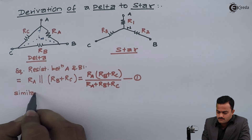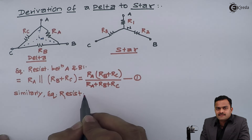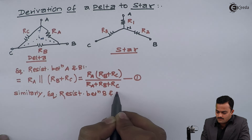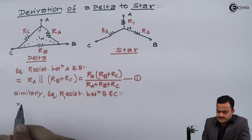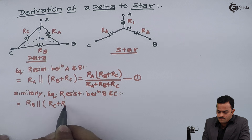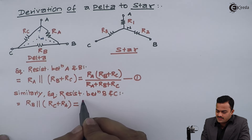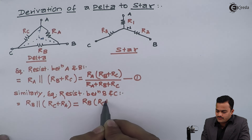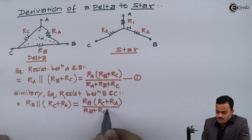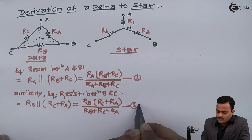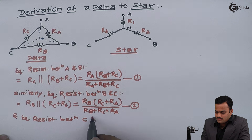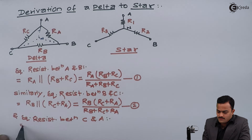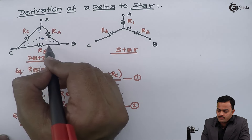Similarly, equivalent resistance between B and C: R_C and R_A will come in series and that will be parallel with R_B. Applying the concept of parallel connection gives multiplication of two resistors divided by addition of these two. And finally, equivalent resistance between C and A: R_C comes in parallel with the series combination of R_A and R_B.